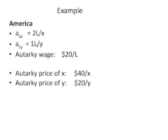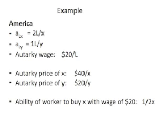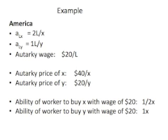We'll use a concrete numerical example. Say America has two sectors: it takes two workers to produce an X and one worker to produce a Y. Assume autarky wages are $20 per worker. Given that wage, the resulting prices would be $40 per X and $20 per Y, given the wage and marginal productivities of labor in the two sectors. With these wages, a worker can buy only one-half a unit of X with their $20 in autarky, and one unit of Y with their $20.